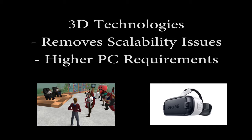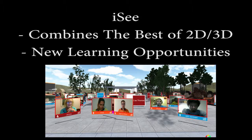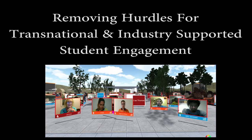3D technologies remove the scalability issues associated with 2D technologies, but do require higher computer requirements to run. The most popular platforms like Second Life or Virtual Reality headsets use virtual avatars. These avatars are great when people are anxious speakers, but the lack of video removes the visual cues that enable a complete and more realistic communication experience. A new technology called IC combines the best of 2D and 3D software platforms. The platform is scalable and allows for new learning opportunities. The purpose of our project is to work out how we can use this software to create new learning opportunities that remove the hurdles for transnational and industry supported student engagement.